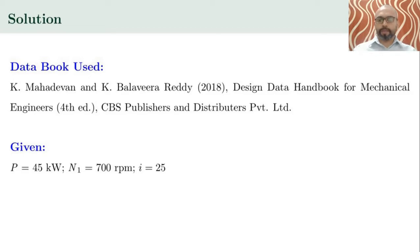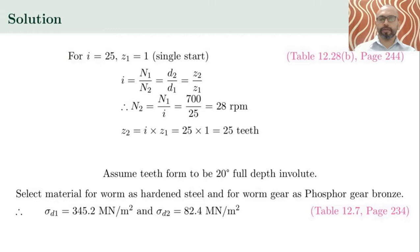The given data: P (power) is 45 kilowatts, N1 (speed of the pinion/WAM) is 700 rpm, and the velocity ratio i is 25. For a velocity ratio of 25, Z1 (number of teeth in the WAM) is 1 — that is, the WAM should be a single-start WAM, obtained from table 12.28B on page 244. The speed N2 is 700 divided by 25, which is 28 rpm. The number of teeth in the WAM gear Z2 equals i × Z1 = 25 × 1 = 25 teeth.